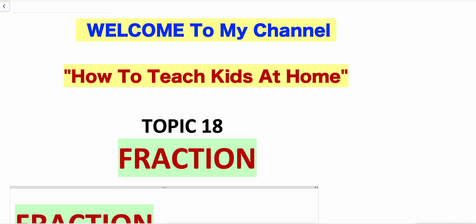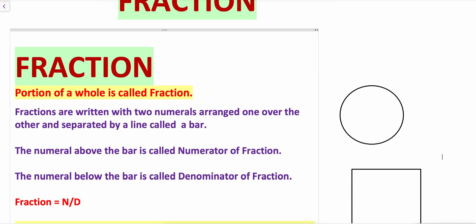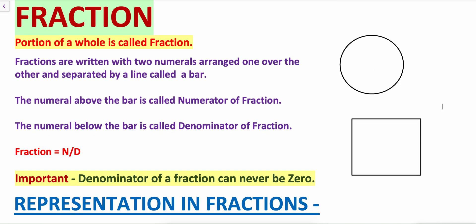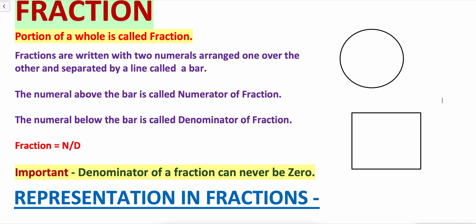What are fractions? The portion of a whole is called a fraction. Fractions are written with two numerals arranged one over the other and separated by a line called a bar. The numeral above the bar is called the numerator of the fraction and the numeral below the bar is called the denominator of the fraction.